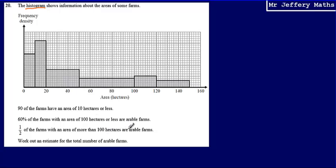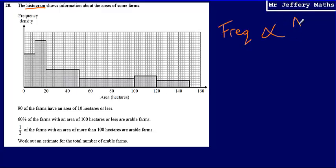When we are given a histogram, the key idea is that frequency is proportional to the area of the bars.